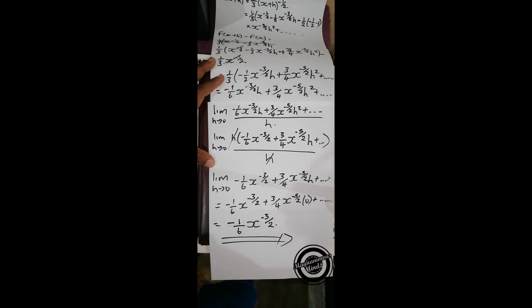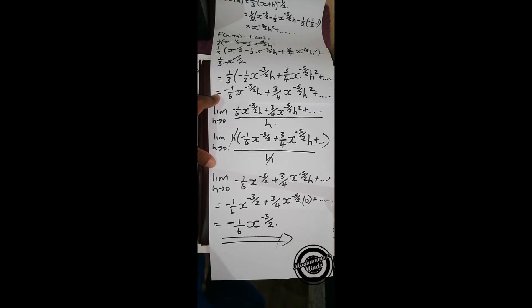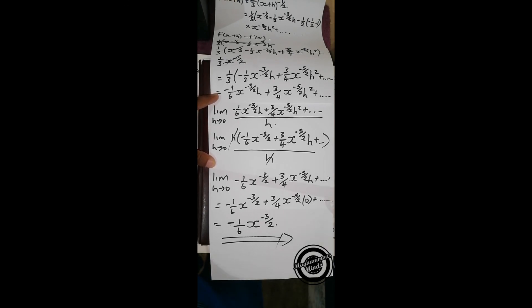And that's it — the derivative is negative one over six times x to the power negative three over two. Thanks for watching our videos. Please subscribe to our channel and like our videos. Also follow us on our social media platforms: Facebook at Magnanimous Minds, Instagram at Magnanimous Minds, and Twitter at Magnanimous Minds 1. Thank you.